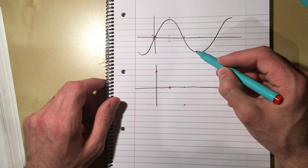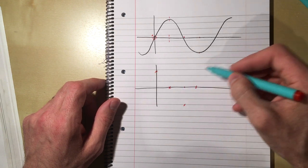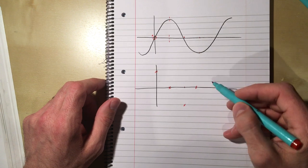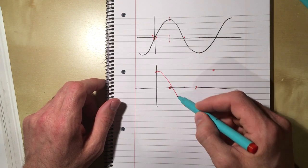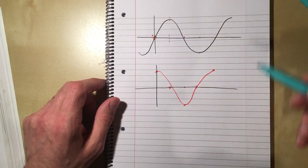the gradient sort of shallows out, stops being as negative, gets closer and closer to 0, and then hits 0. So the gradient does that. And if we then just sort of repeat this process here, the gradient gets steeper and steeper and steeper, until as steep as it's going to be.